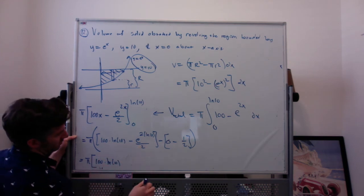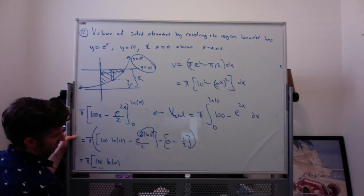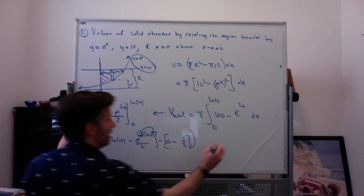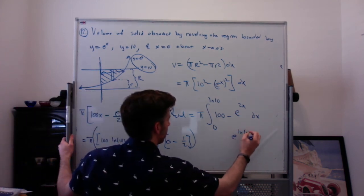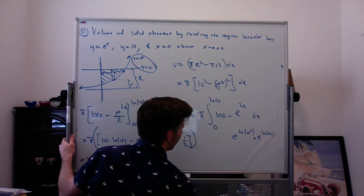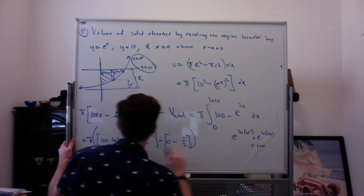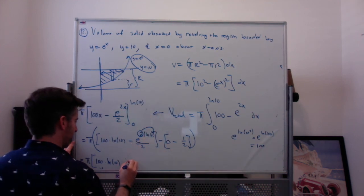E to the 2 natural log of 10, and this 2 comes up as the power here, and you get e to the natural log of 10 squared, or e to the natural log of 100. E to the natural log of a thing is just a thing, so e to the natural log of 100 is just 100. This is actually 100 over 2, which is 50.